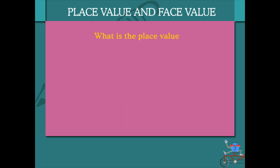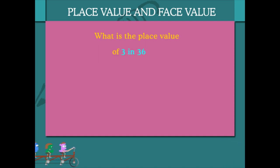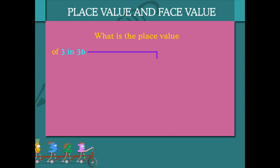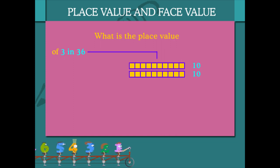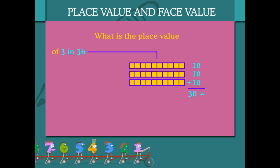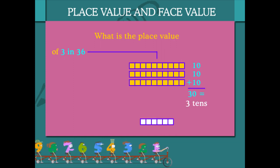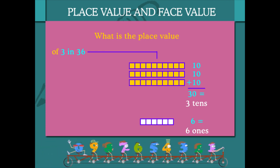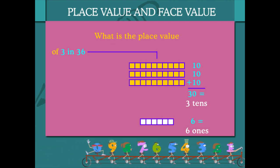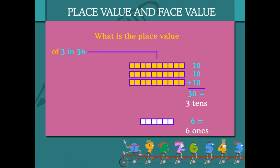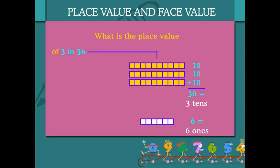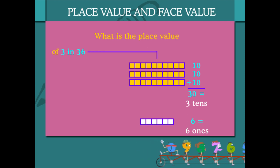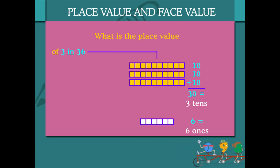Let's look at the place value. What is the place value of 3 in 36? The 3 in 36 represents 3 tens and the 6 represents 6 ones. So, place value of 3 in 36 is 3 tens.